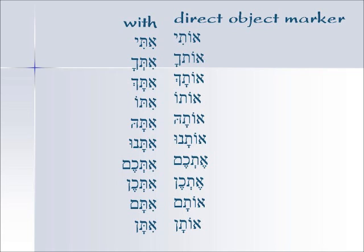The only ones that, if you take out all the vowels, look exactly the same are 'with all y'all' — plural, feminine, and masculine. But generally we can look at them and see how to translate this combination of letters.